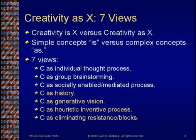Last time we made the distinction about thinking of creativity as a simple concept — defining creativity as X — versus thinking about creativity as a complex subject where we need to think of creativity as X in seven different ways. Last time we considered creativity as individual thought process, group brainstorming, and socially enabled or mediated process. This time we want to consider creativity as history, generative vision, heuristic inventive process, and as eliminating resistance or blocks.